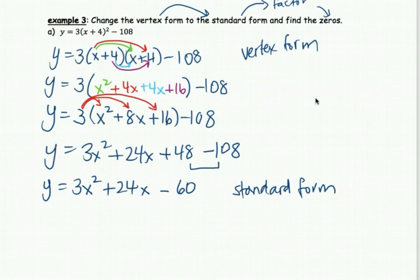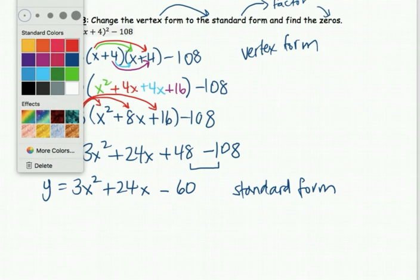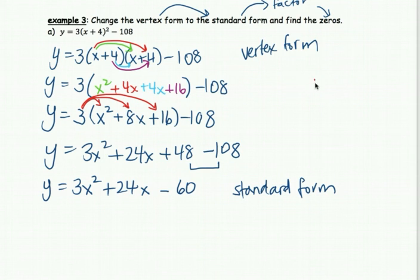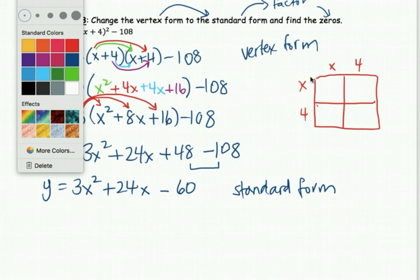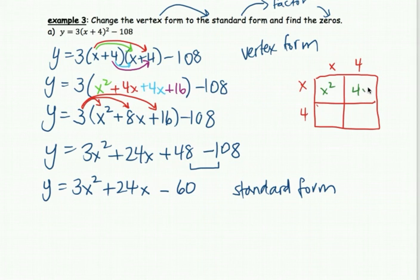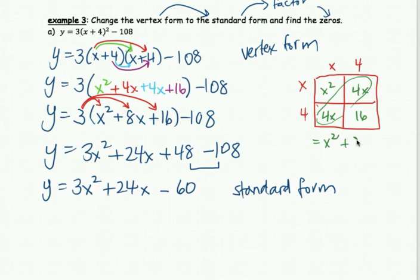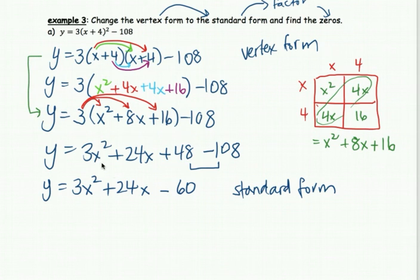For students who like the area model: draw your box, put x plus 4 on each side, multiply into the boxes to get x squared, 4x, 4x, and 16, then take it out of the box and add the two middle terms together to get x squared plus 8x plus 16. Then change this part — multiply the 3 in — and continue to get 3x squared plus 24x minus 60.